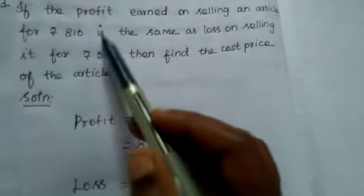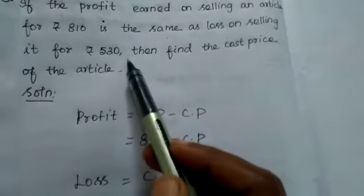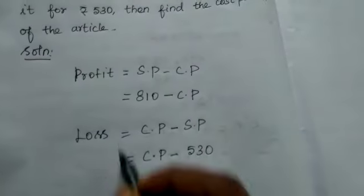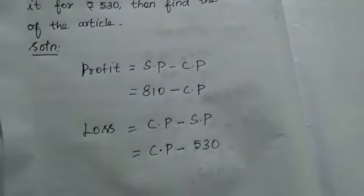Next, what is the condition? Both are the same. If the profit earned on selling an article for ₹810 is the same as loss on selling it for ₹530, so we can equate this: profit equals loss. 810 minus cost price equals cost price minus 530. Given profit equals loss.